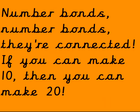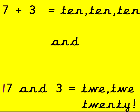Number bonds, number bonds, they're connected. If you can make 10, you can make 20. 7 add 3 is 10, and 17 add 3 is 20.